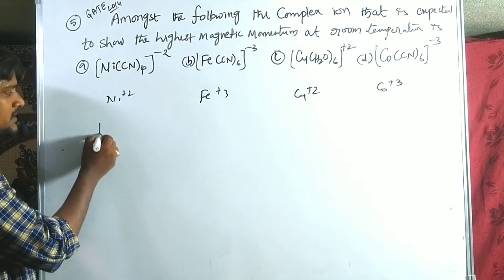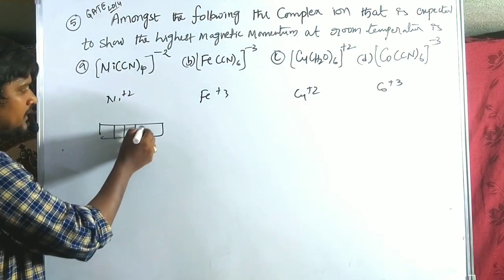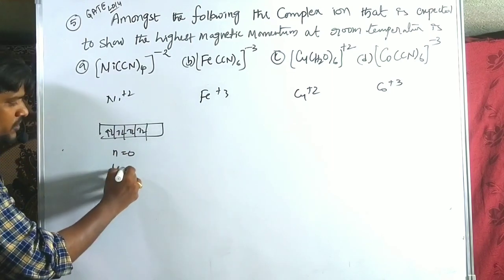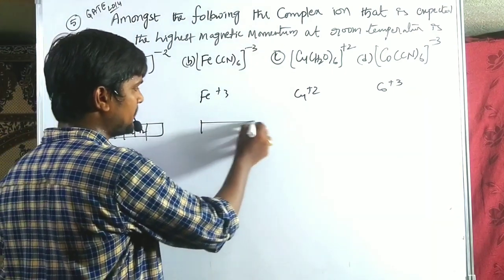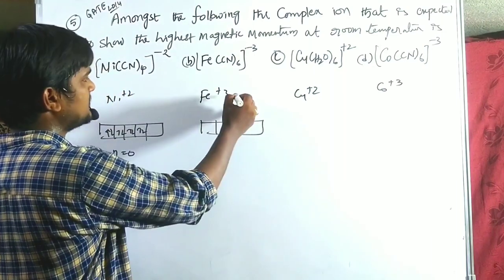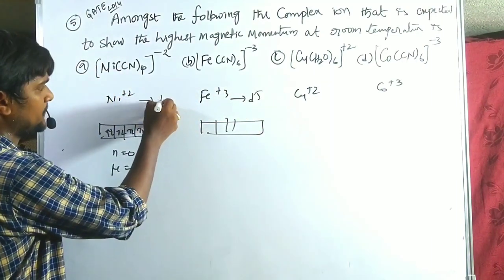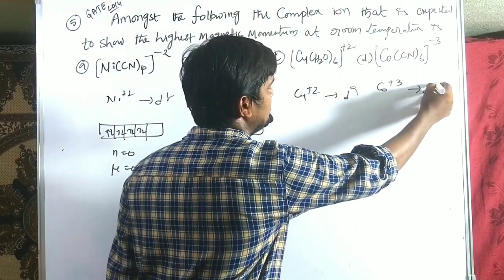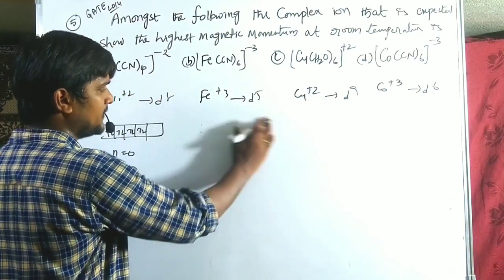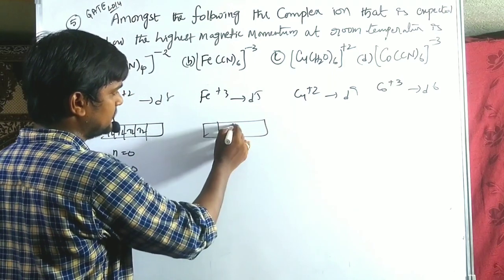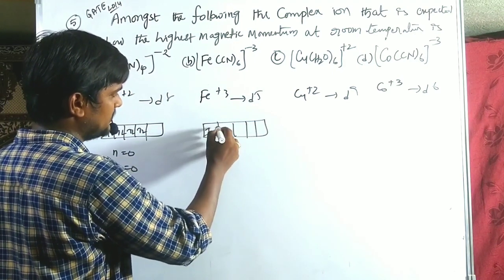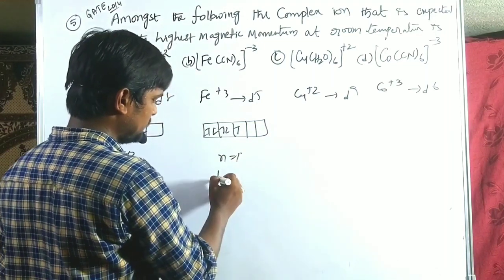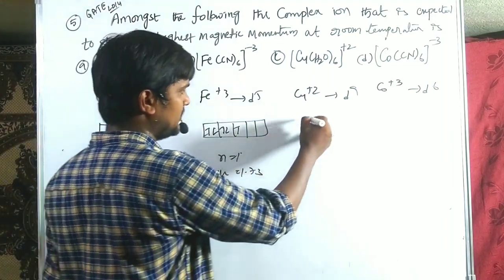Ni²⁺ (d⁸) with strong field CN⁻: all paired, n = 0, μ = 0. Fe³⁺ (d⁵) with strong field CN⁻: filling gives n = 1, μ = 1.732 BM. Cu²⁺ (d⁹) with water: 9 electrons fill as t₂g⁶ eg³, n = 1, μ = 1.732 BM. Co³⁺ (d⁶) with strong field CN⁻: all paired, n = 0, μ = 0.